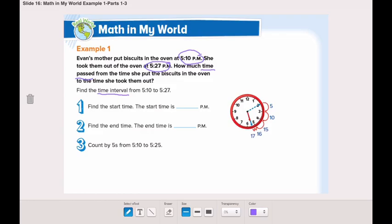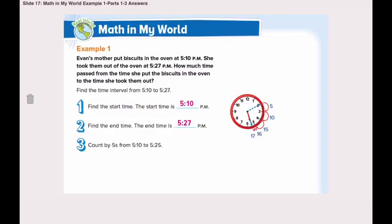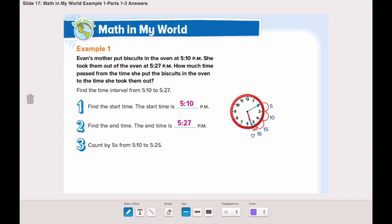Now, our third step is to skip count by 5s from 5:10 PM. Here, the long hand is on 2, which is 10 minutes. We will start from 10 minutes and skip count by 5 until we reach 5:25. Let's continue counting: 5, 10, 15, 20, 25.